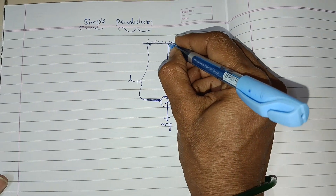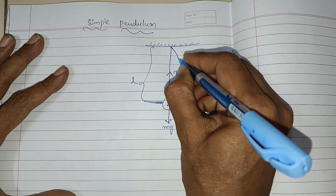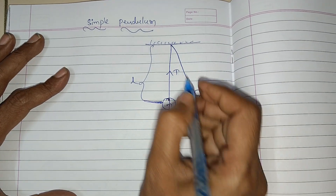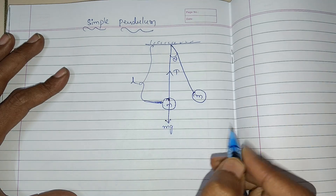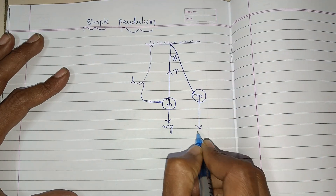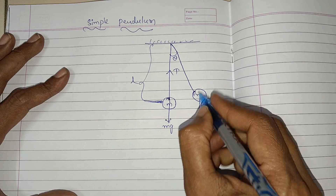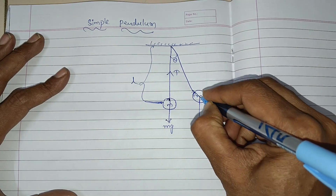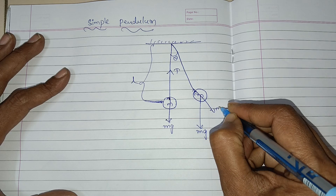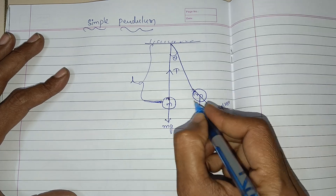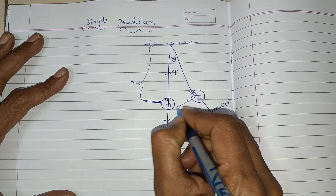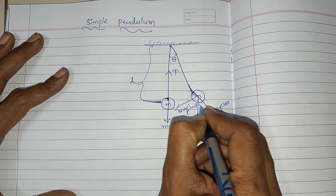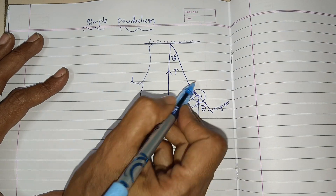If you give a small angular displacement, the position of the bob will be here. This is M and this is angular displacement theta. The weight will act downwards, and this weight will be resolved into two rectangular components. The straight component is Mg cos theta and the other component is Mg sin theta. These are the two perpendicular components. Since the angle is theta, this angle will also be theta.